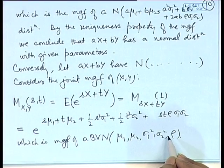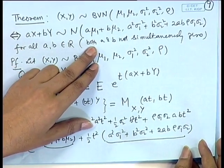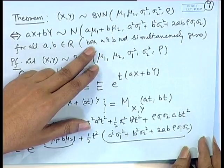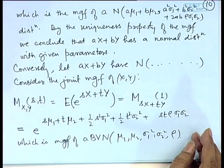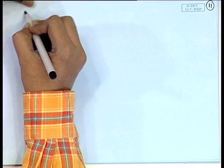Notice that the joint MGF is extremely useful, not only in general but specifically in proving certain characterization properties of the bivariate normal distribution. We also look at the generalization of the concept of joint distributions to more than 2 variables. In general, we may consider a k-dimensional random variable, which we call a random vector.